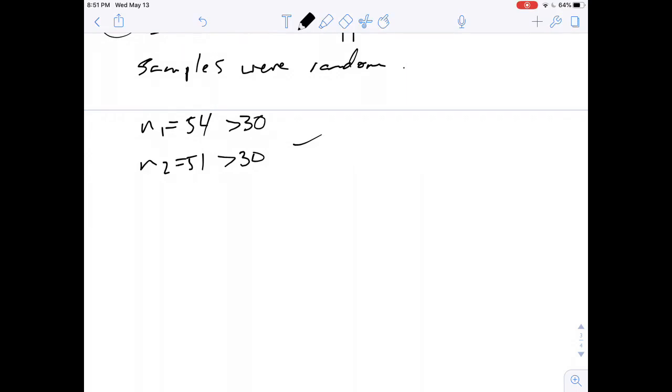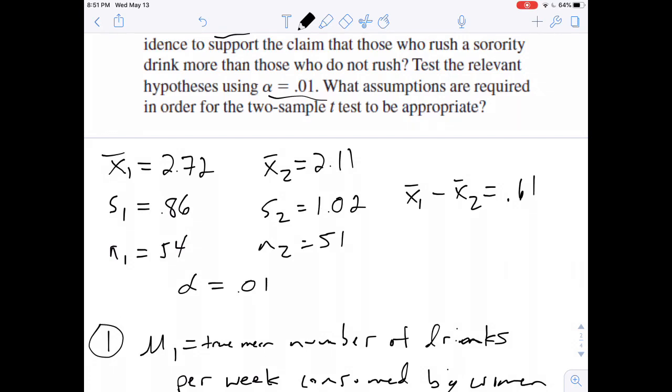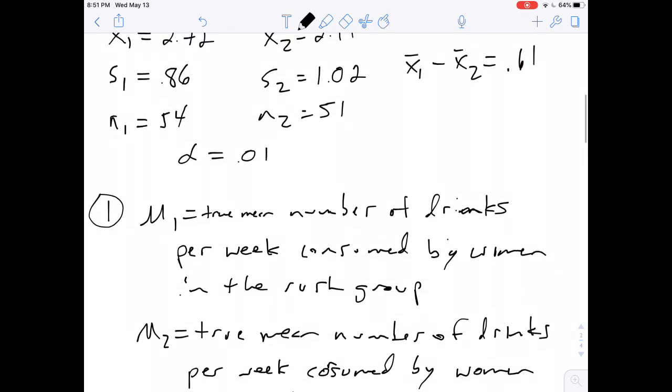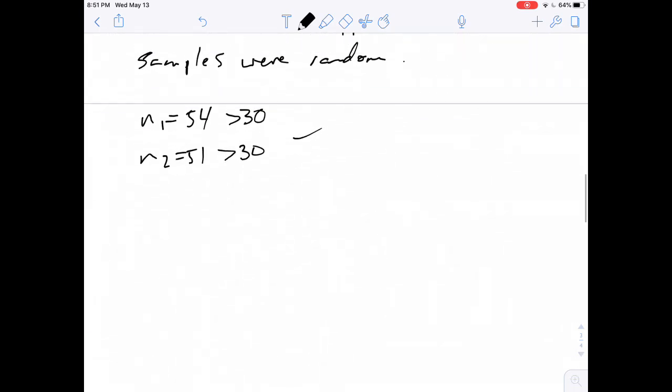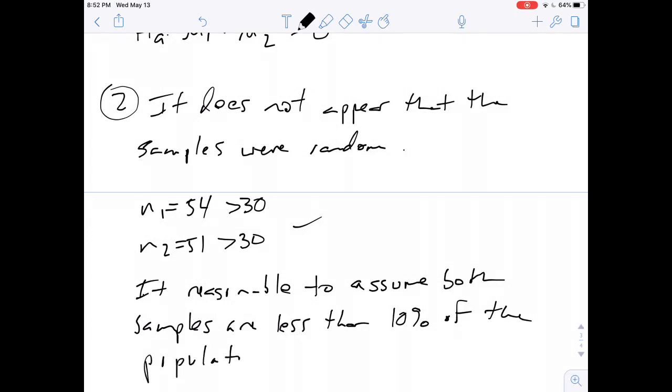And then we also need independent sampling, so we'll assume that our samples were no more than 10% of the population. If I look at my samples of 54 and 51, if I were to multiply those by 10 - 540 and 510 for the population sizes - I would say yes, that would be true, that both of those populations would be larger than those numbers. So we'll just say something like it is reasonable to assume both samples are less than 10% of the population.